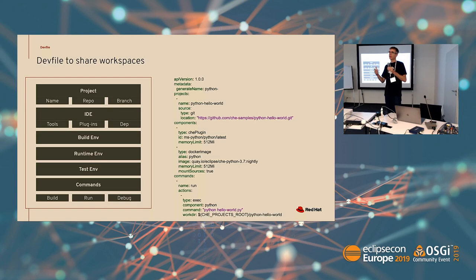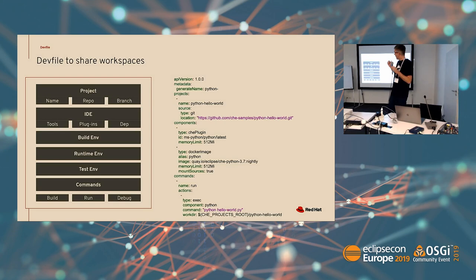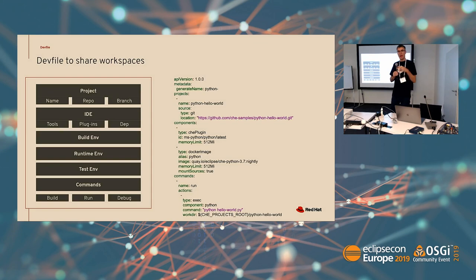Then we select the components that we need or want. We have different kinds of components. First we have the Che plugin components, and you can see that we have an ID. This ID will be searched on the plugin registry. We also have another kind of component: the Docker image, where you specify all the Docker images you want inside your workspace.